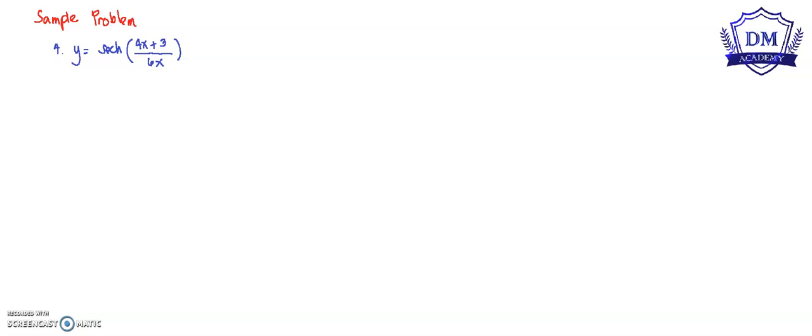Welcome back to the Epicademy. Let's have another problem. The function y is equal to the hyperbolic secant of (4x + 3) all over 6x. To solve this problem, we will use the chain rule.